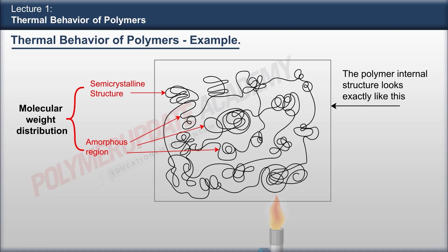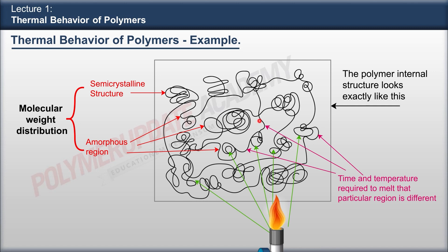Now let us give a temperature from one corner to this polymer structure. When we are providing temperature to this particular point, it will start melting the cluster closer to it. Now if that cluster is having a higher molecular weight, it will take more time and more temperature to melt. Then as it comes to a lesser molecular weight distribution, it will take less time and less temperature. That is how it will take some time and temperature to melt all these polymer clusters from one corner to another.